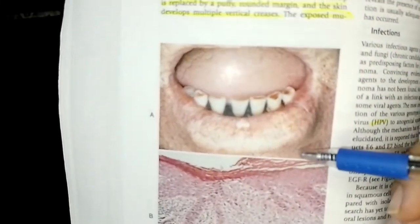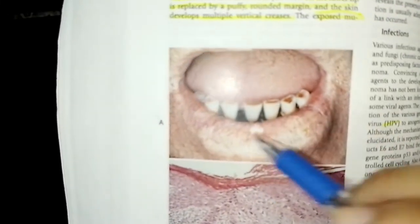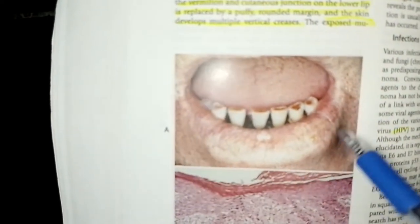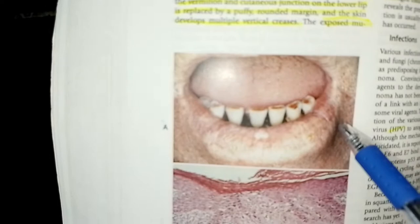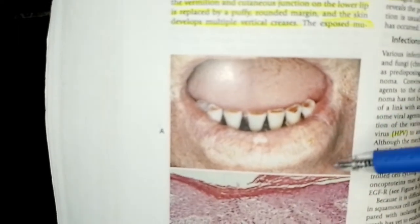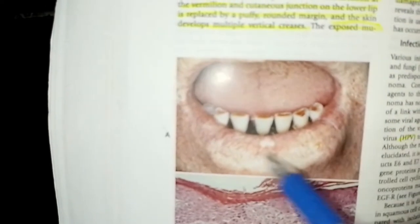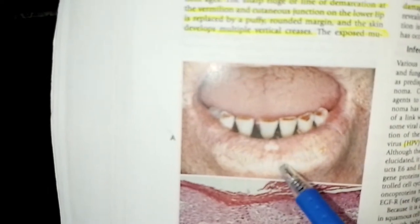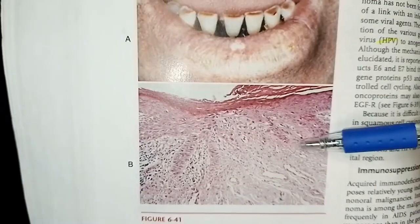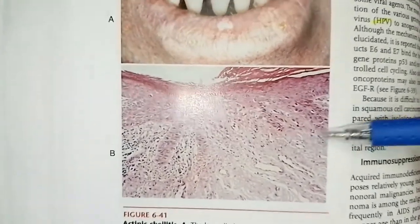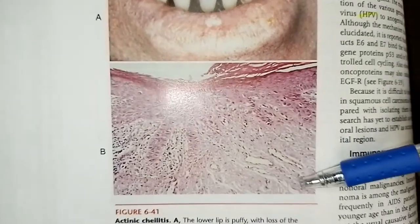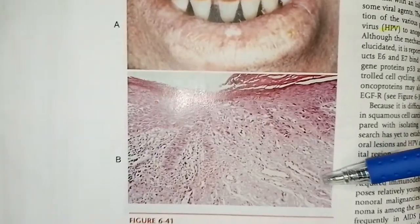Actinic radiation causes the lower lip to become puffy, with loss of the distinct vermilion border, and it will appear mottled and leukoplakic with atrophic areas. The histopathology shows hyperorthokeratosis, epithelial atrophy, dysplasia, basophilic degeneration of collagen, and telangiectasia.